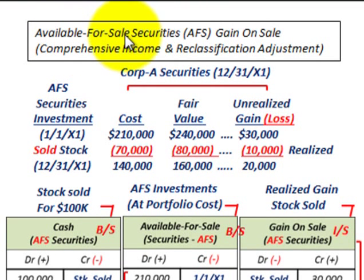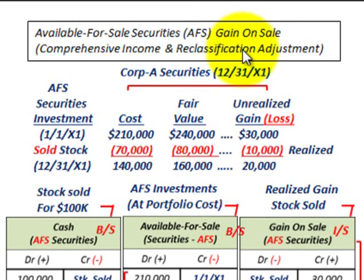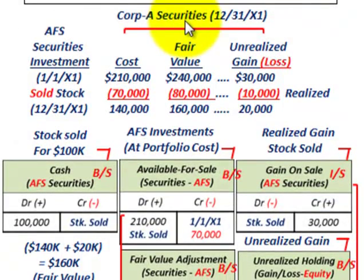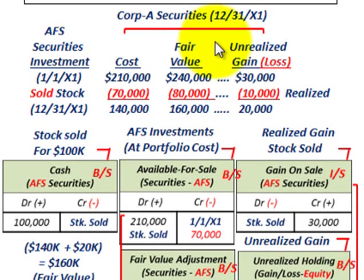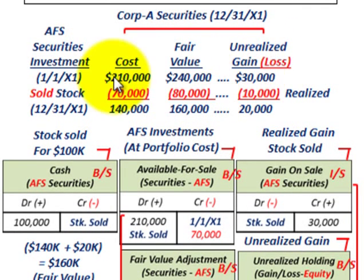What we're going to be going over here is available for sale securities. We're going to look at a gain on the sale of some of these securities, how it affects comprehensive income, and a reclassification adjustment that's required. We're going to have Corporation A holding some available for sale securities, and we have to determine any unrealized holding gains or losses on these securities.